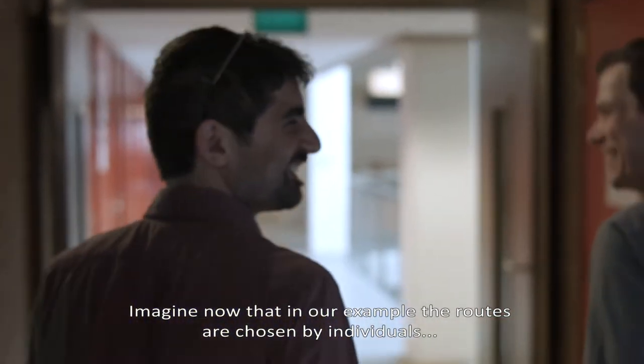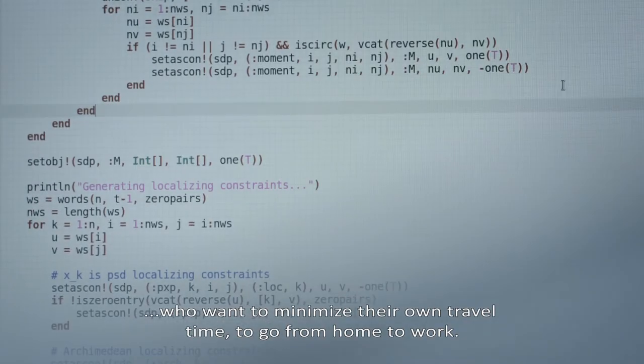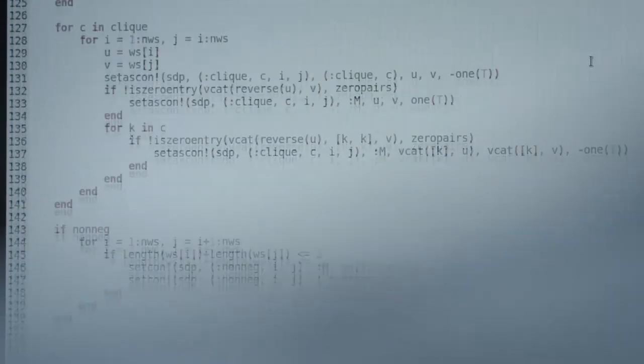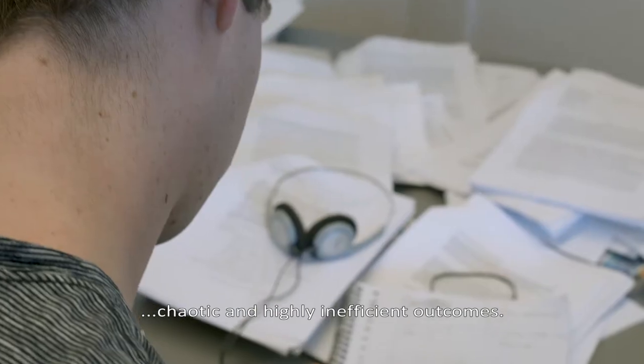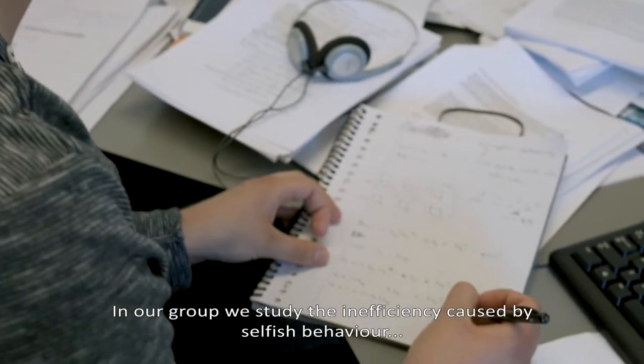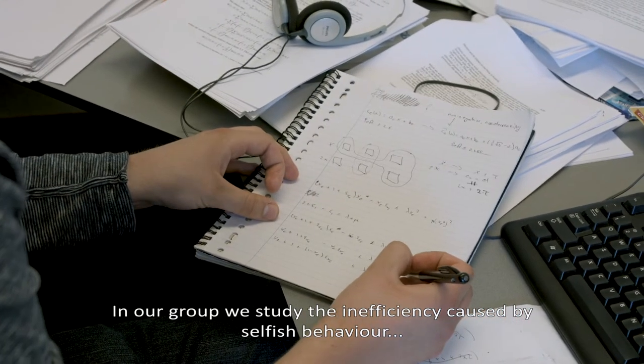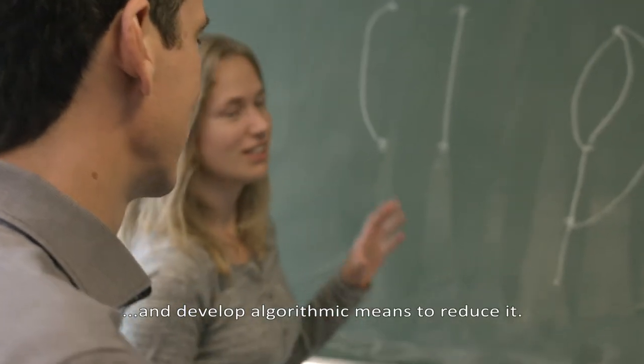Imagine now that in our example the routes are chosen by individuals who want to minimize their own travel time to go from, say, home to work. Such uncoordinated and selfish route choices may lead to chaotic and highly inefficient outcomes. In our group, we study the inefficiency caused by selfish behavior and develop algorithmic means to reduce it.